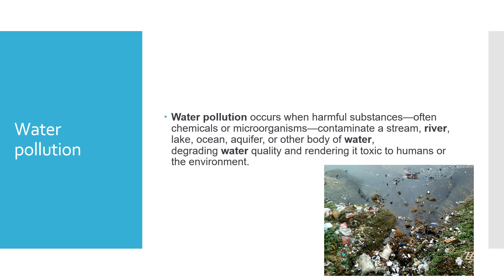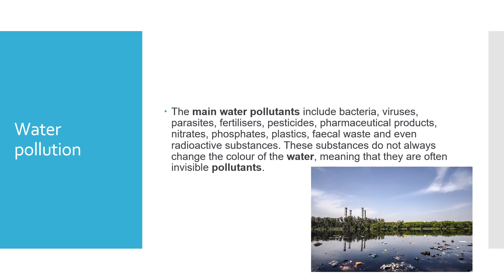Water pollution occurs when harmful substances, often chemicals or microorganisms, contaminate a stream, river, lake, ocean, aquifer or other body of water, degrading water quality and rendering it toxic to humans or the environment. The main water pollutants include bacteria, viruses, parasites, fertilizers, pesticides, pharmaceutical products, nitrates, phosphates, plastics, fecal waste and even radioactive substances. These substances do not always change the color of the water, meaning they are often invisible pollutants.